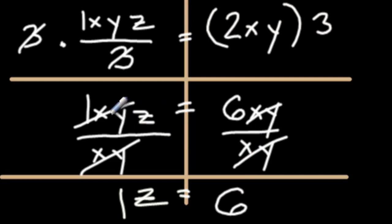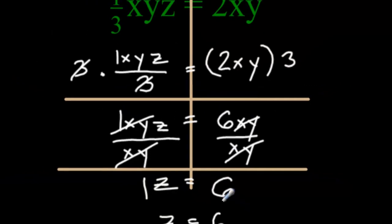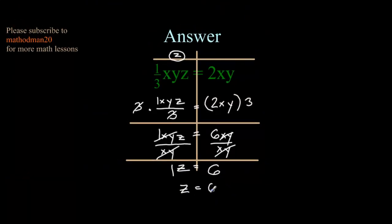In the end, the 1z drops down equals 6 drops down, which is the same as z equals 6.